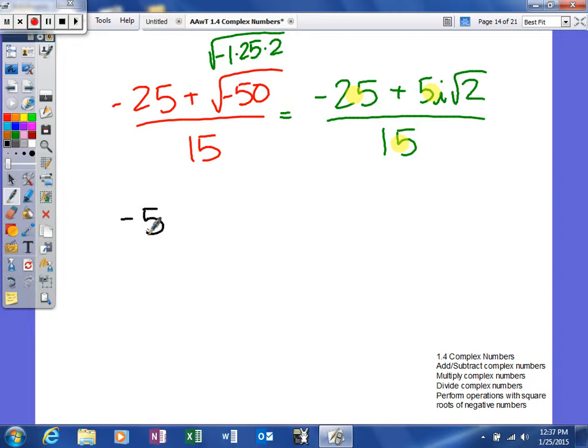So when you divide them all by 5, you get negative 5 plus i square root of 2 all over 3.